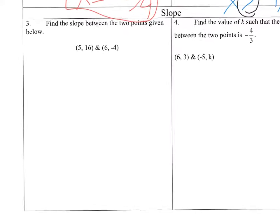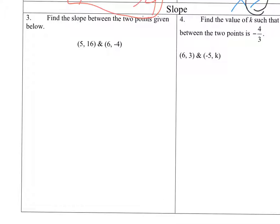Next up, I've got to find the slope between a couple points. Between 5 comma 16 and 6 comma negative 4. Okay, I've got to see how much the y's are changing. So to get from 16 to negative 4, I'm going down 20. I'm going to divide that by how much the x's are changing. To get from 5 to 6, I'm going up 1. So negative 20 is my slope.